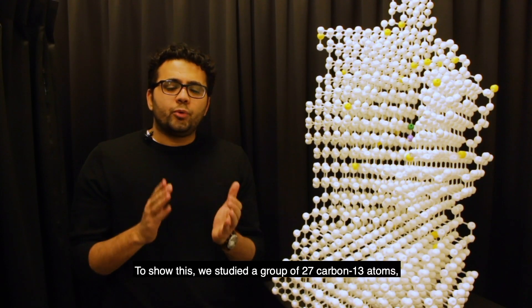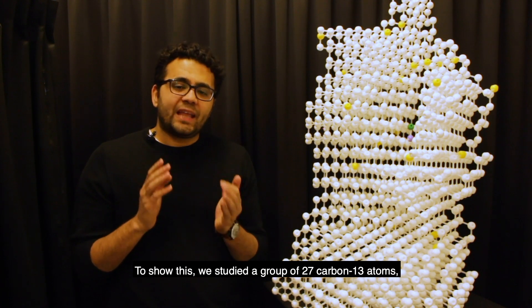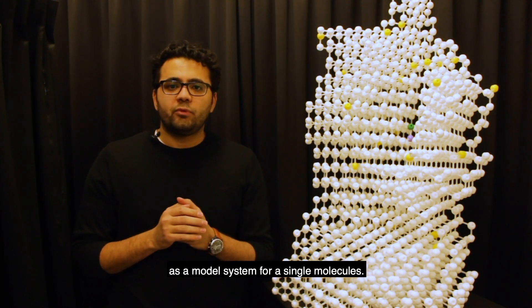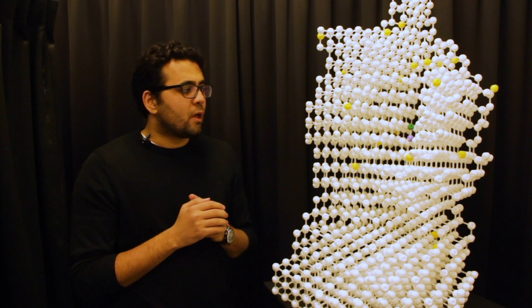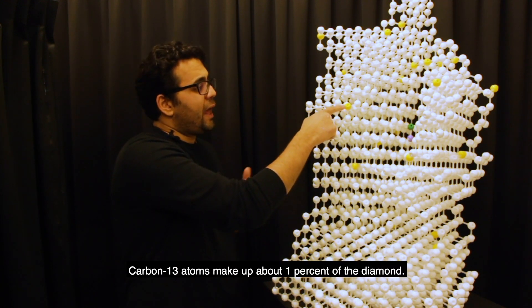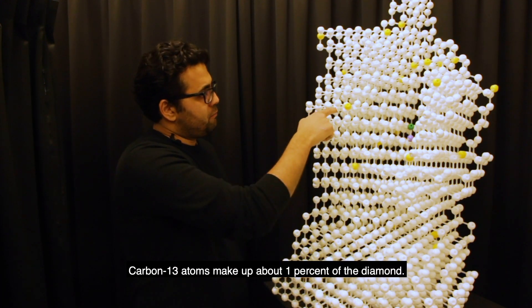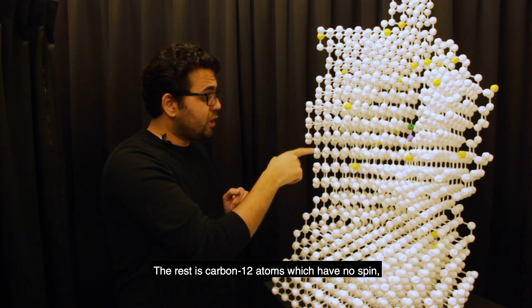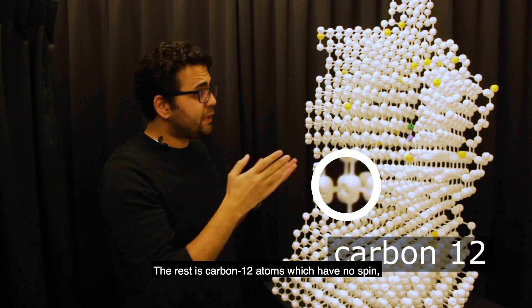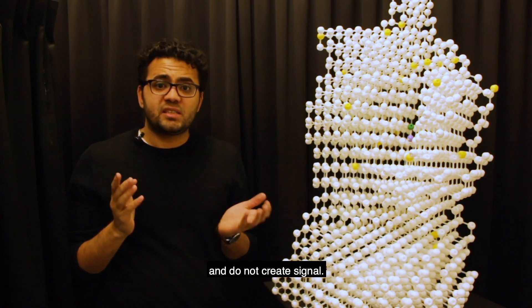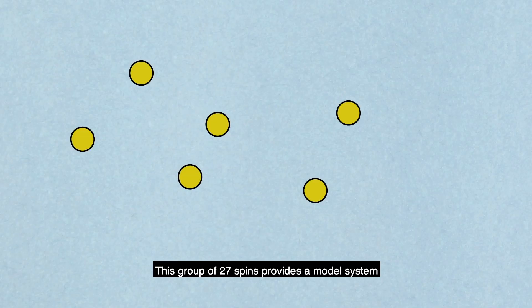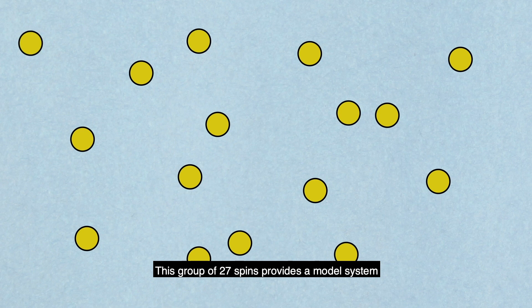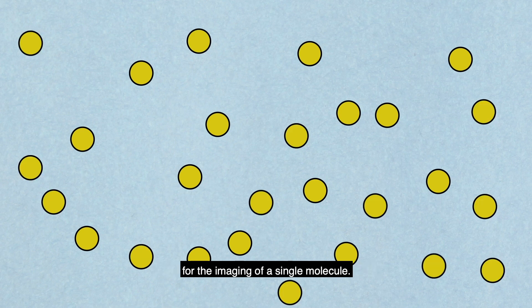To show this, we studied a group of 27 carbon-13 atoms as a model system for a single molecule. Carbon-13 atoms make up about one percent of the diamond. The rest is carbon-12 atoms which has no spin and does not create signal. This group of 27 spins provide a model system for the imaging of a single molecule.